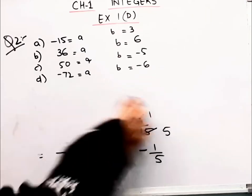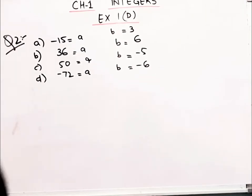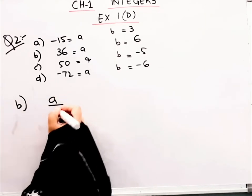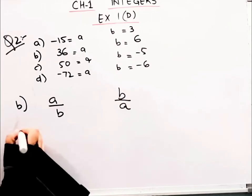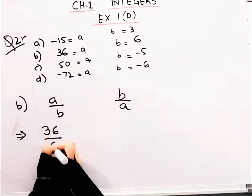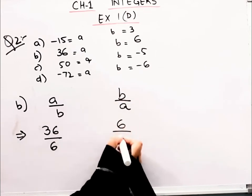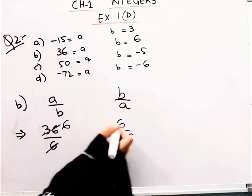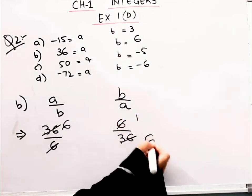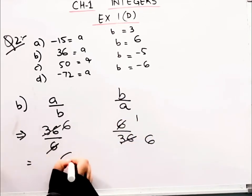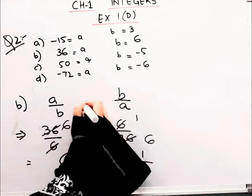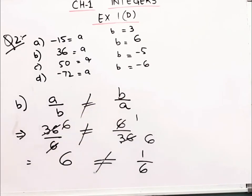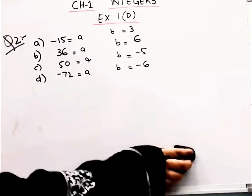Are these two numbers the same? No, these two are not the same. That means these two numbers are not same. This means we have verified this. Clear? Now let's move to part (b). In part (b), we have to verify a upon b is not equal to b upon a. A is 36, b is 6. Right hand side, we write b on top and a on bottom: 6 divided by 36. 6 sixes are 36. This will be 6, and this will be 1 by 6.